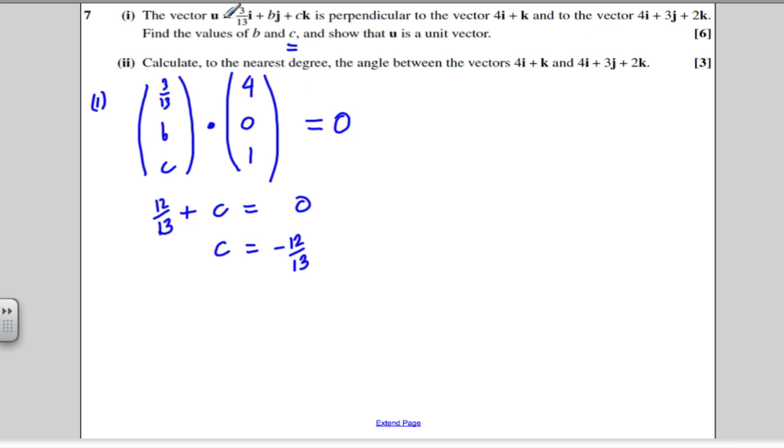On the other hand, it tells us that vector is perpendicular to that vector. So doing the same thing, 3/13 with B amounts of j and C now we know is minus 12/13. If I dot that, take the dot product of that with this vector,